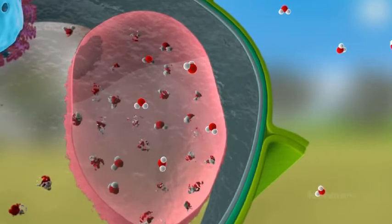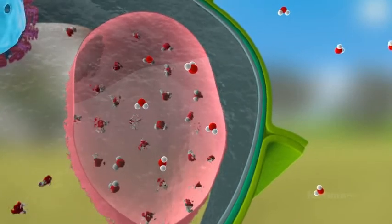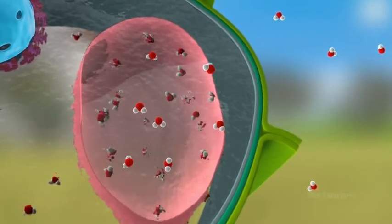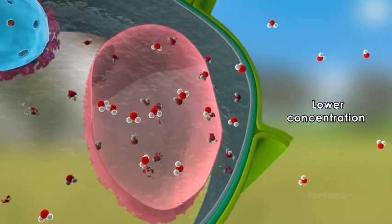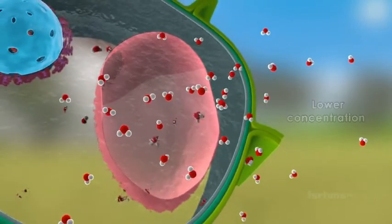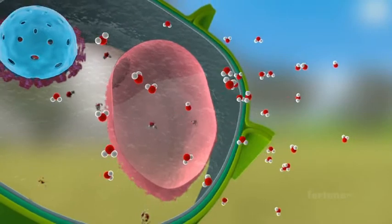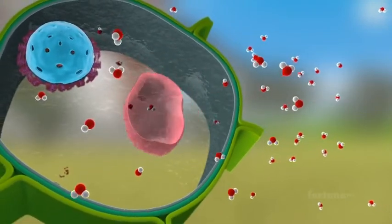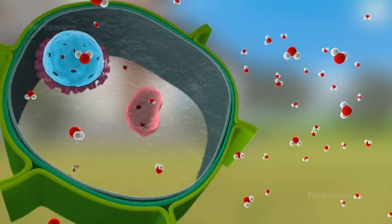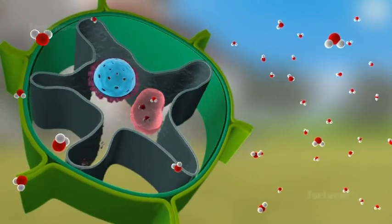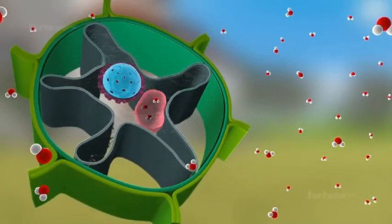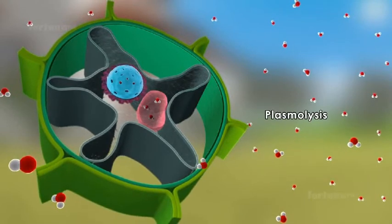If a plant cell is placed in a hypertonic environment, a solution with a lower concentration of water than the cytoplasm, then water will move from inside the cell to the outside through osmosis. The cell will shrink away from the cell wall. This phenomenon is known as plasmolysis.